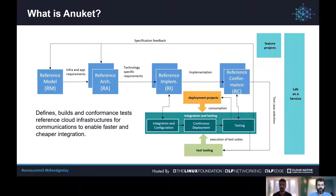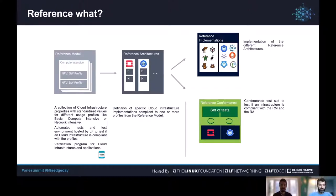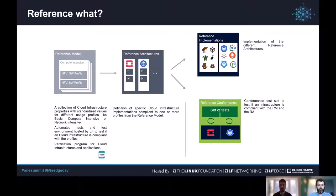Focusing on the specification projects: the reference model is an abstract, non-technology-specific description of cloud infrastructure properties with assigned values. From this reference model, two technology-specific reference architectures are created — one for OpenStack and one for Kubernetes. These specify what properties a Kubernetes or OpenStack-based cloud infrastructure should have to run workloads without any problem, from the application's point of view.